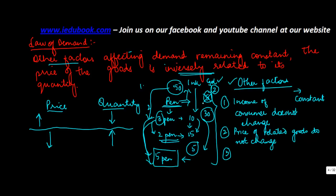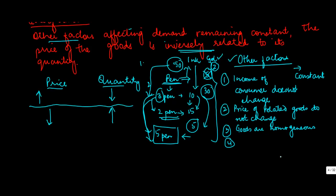So, price of the related goods or price of goods which might remain or can be used as alternatives do not change. The third thing is, goods are homogenous. Needless to mention that all these pens should be of the same type and quality. Otherwise, the consumer might switch on or switch off their preferences.